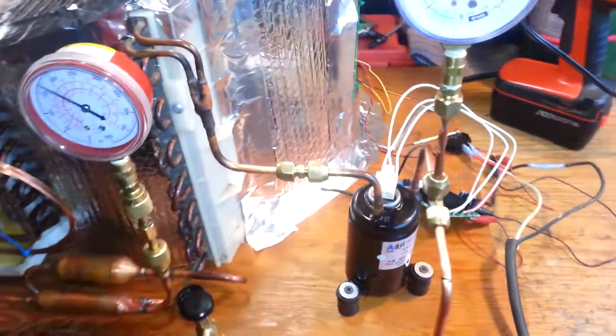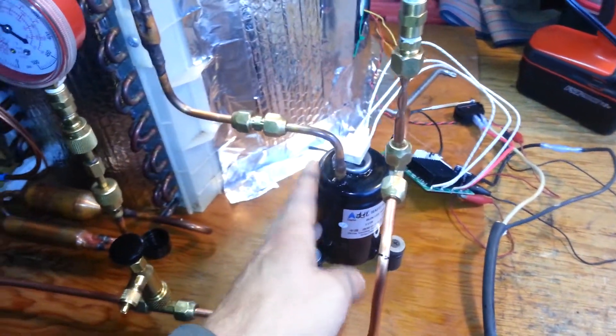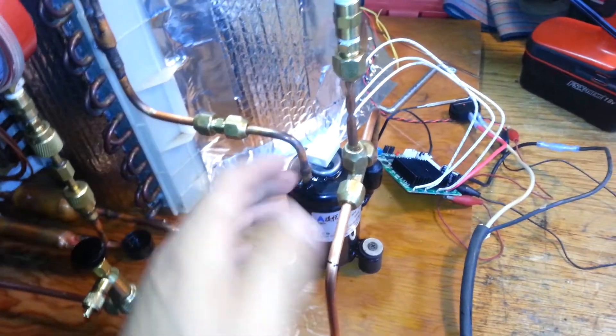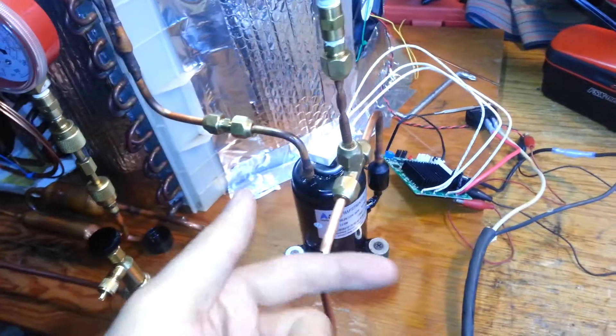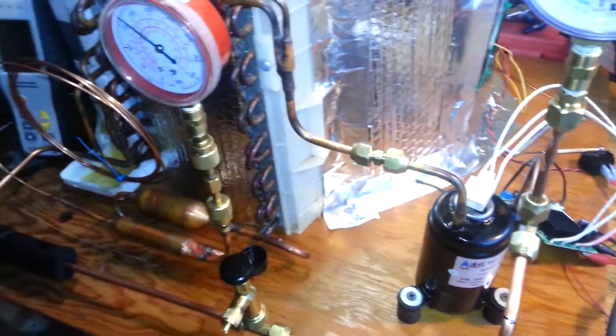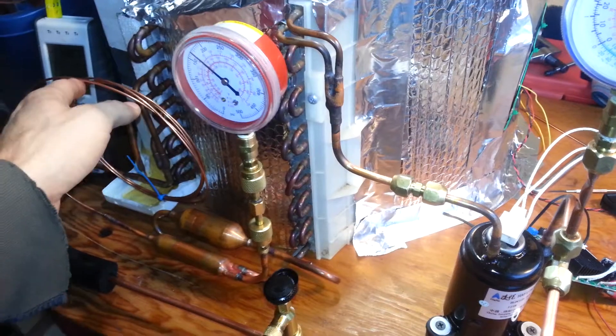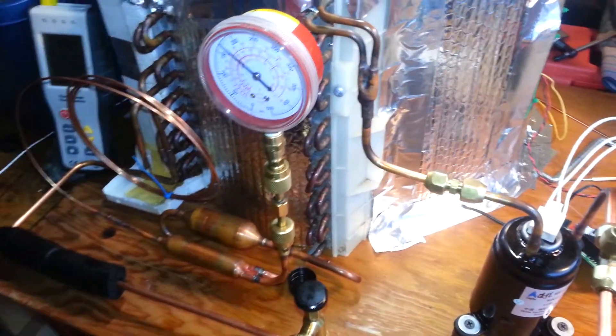Anybody out there interested in working with something like this, these small compressors can be purchased on eBay for a reasonable amount of money from China. You have to do some brazing to do the connecting. Everything in this system is quarter-inch, except for the capillary tubing.